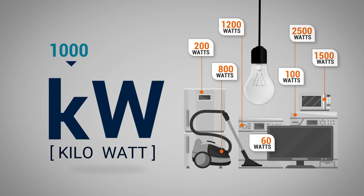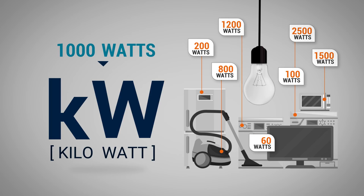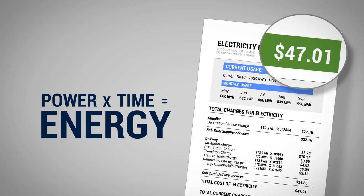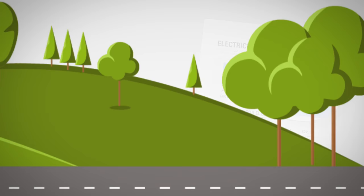Kilo means 1,000, so a kilowatt is 1,000 watts. However, both watts and kilowatts are only a snapshot of instantaneous electrical usage. Energy, which is what we really care about and what the utility company charges you for, is that accumulated amount of power being used over some period of time. Energy is expressed in kilowatt hours.